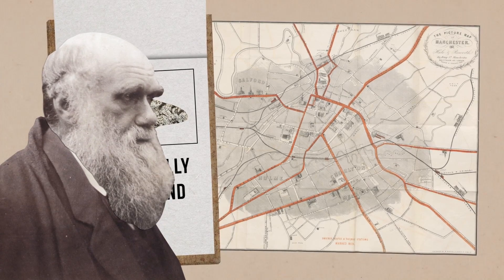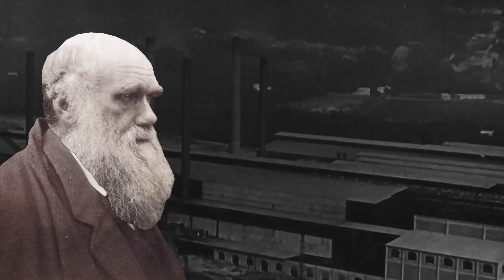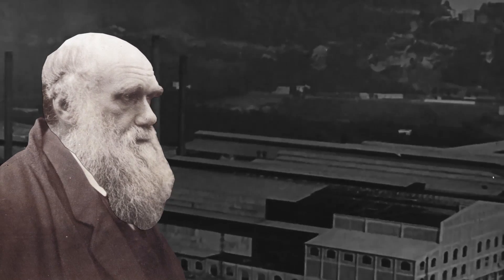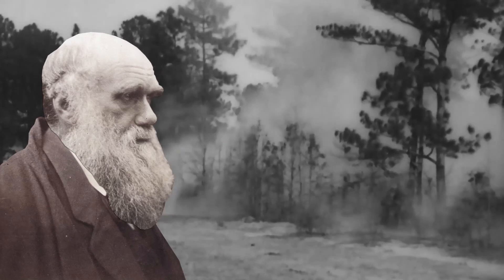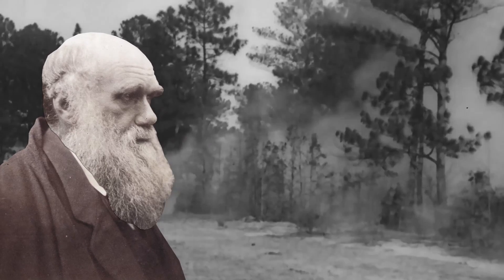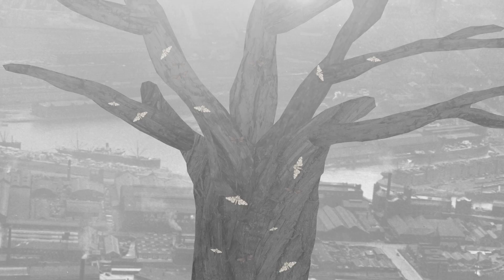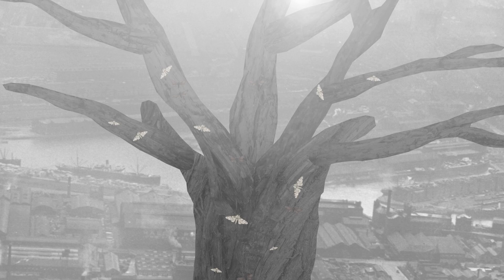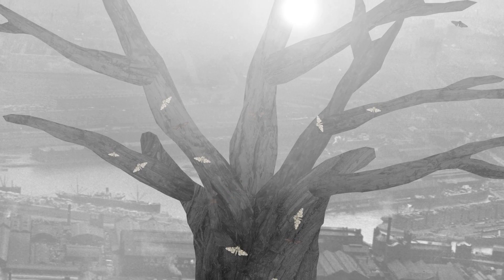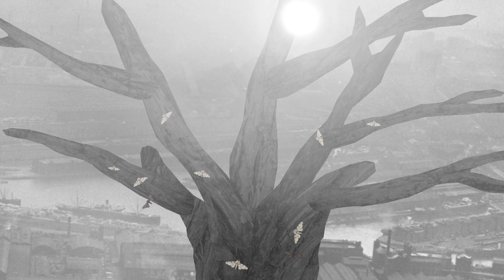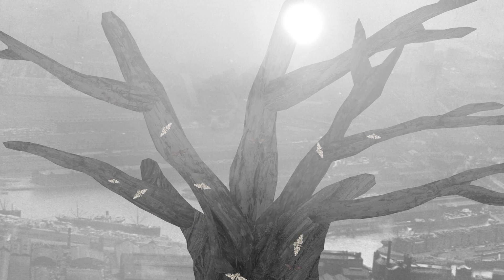Darwin's explanation was simple. Manchester's rise as a major industrial city meant that huge quantities of soot had entered the atmosphere and darkened tree trunks. Thereafter, light-winged moths became highly conspicuous to their main predators — birds — while the dark-winged ones were effectively camouflaged.